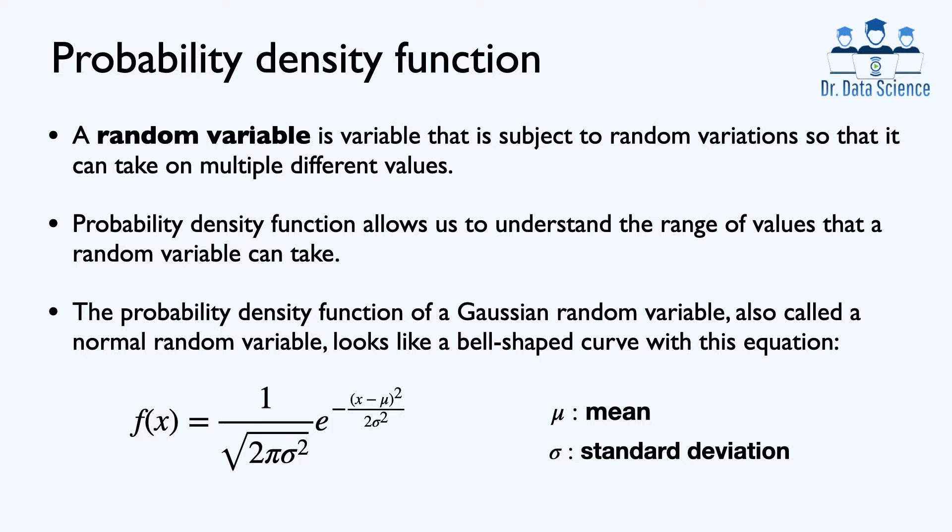Now that we know what a random variable is, we can define probability density function. Probability density function allows us to understand the range of values that a random variable can take. For example, temperature values during the summer time and winter time are completely different, so it might be useful to use a probability density function to understand the distribution of temperature in different seasons.